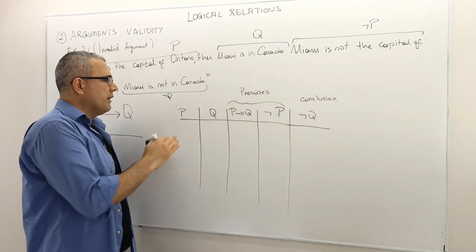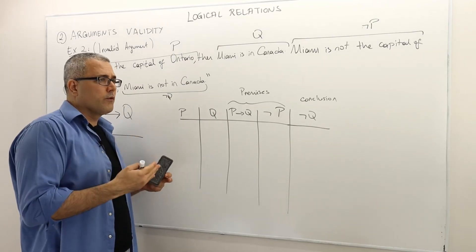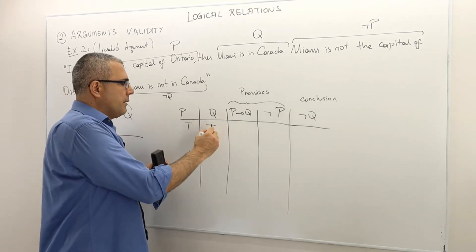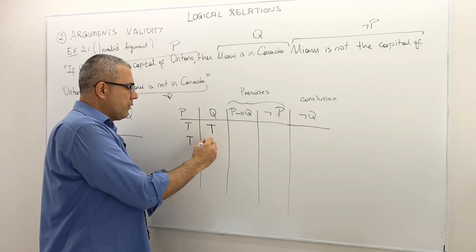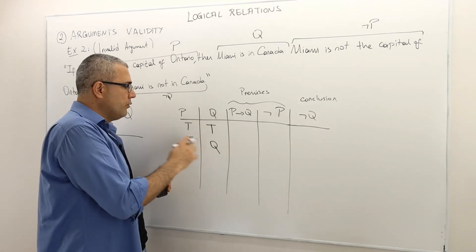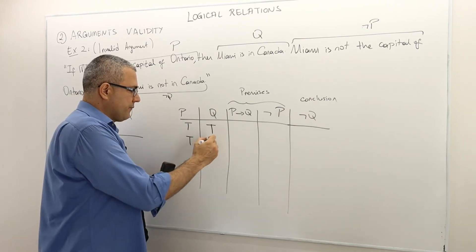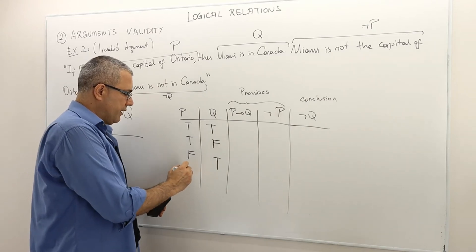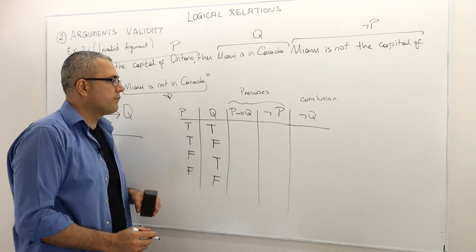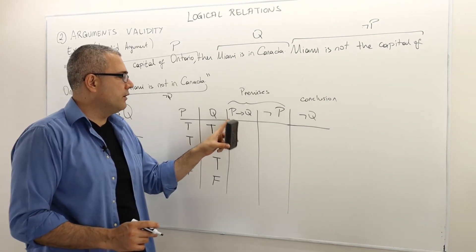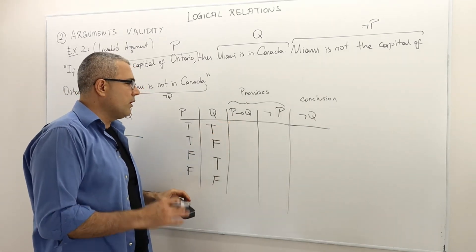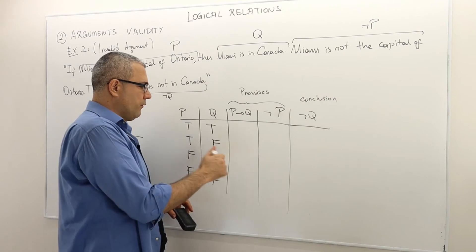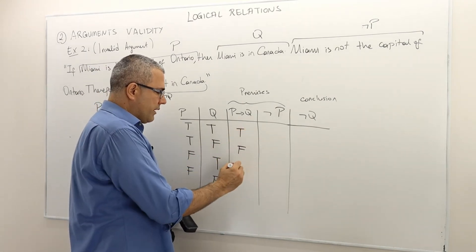P and Q values are either true or false. Because there are two atomic sentences, there are four possible scenarios: they both could be true; P could be true but Q false; P could be false but Q true; and they both could be false. Now, P implies Q is always true unless P is true and Q is false — in that case it is false, and everywhere else it is true.